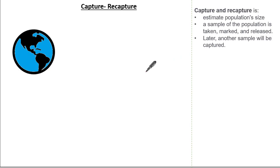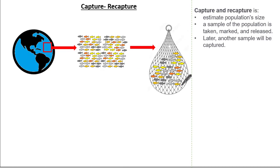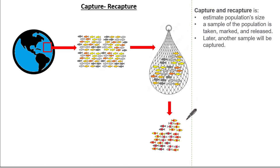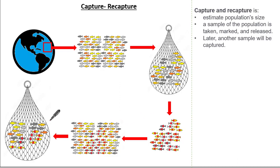Let's have a look at an example of how Capture and Recapture works. Let's pretend we're looking at a region in the ocean to estimate the population of a type of fish. We humanely capture our first sample, mark or tag each fish, and then release them back into the same region. Some time later we collect our second sample and record how many are marked.